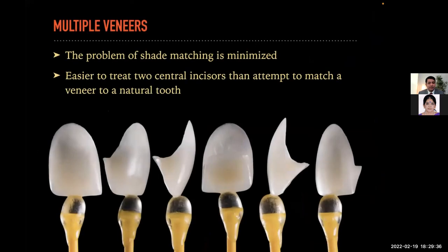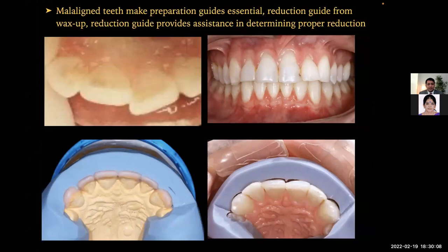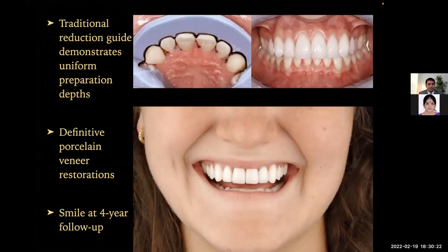You should consider giving multiple veneers because the problem with shade matching is minimized in multiple veneers. It's easier to treat two central incisors than to attempt to match a veneer to a natural tooth. For tooth preparation, the amount of tooth structure removed is determined by shape, size, and the color or shade of the tooth. Correction of mild overlapping requires preparation through the contact to allow contour alterations. Mild-aligned teeth make preparation guides essential. A reduction guide provides assistance in determining proper reduction — a traditional reduction guide demonstrates uniform preparation tips for definitive porcelain veneer restorations.